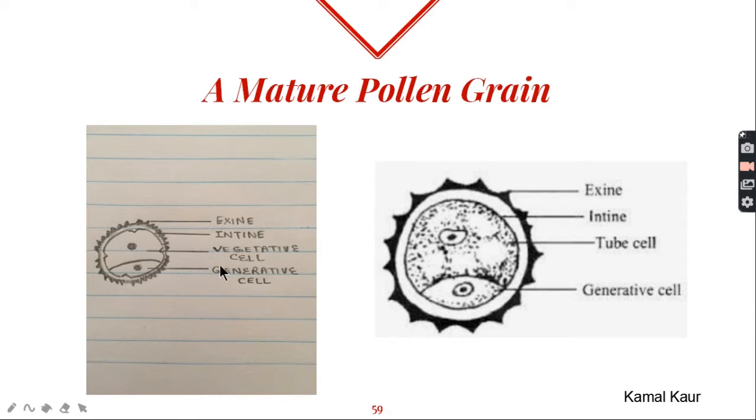The smaller one is called the generative cell and it will generate two male nuclei which will help in the fertilization process.